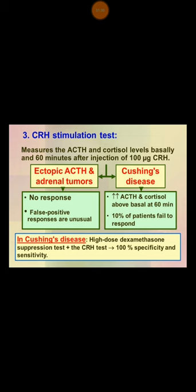In the CRH stimulation test, you inject the patient with 100 micrograms of CRH, and then you measure the ACTH and cortisol level at 60 minutes. In ectopic ACTH and adrenal tumors, there is no response. But in Cushing's disease, you will have an increase in ACTH and cortisol level above baseline at 60 minutes.